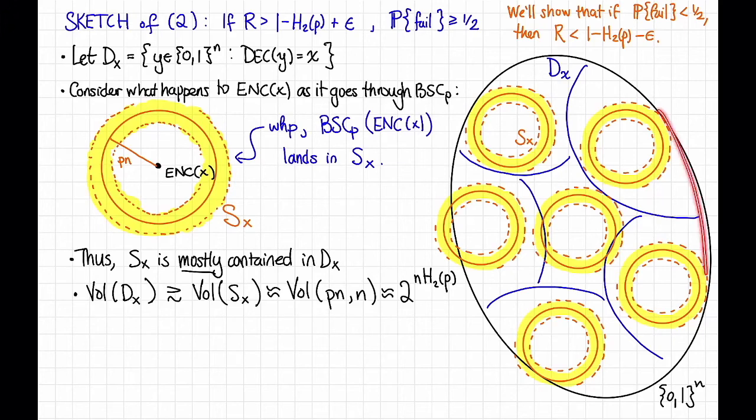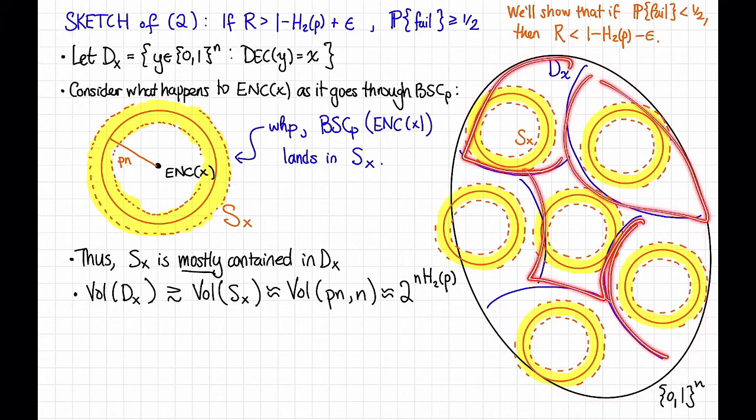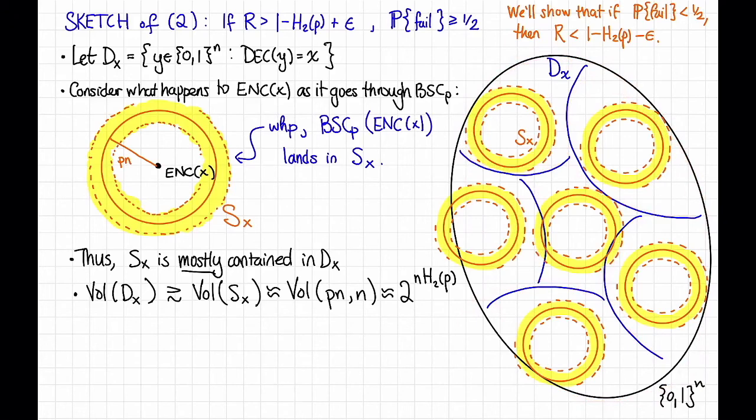But since this whole space, {0,1}^n, is broken up into these regions D_x, that means that the total volume in this space divided by this bound on the total volume of each of the D_x's is going to give us a bound on the number of D_x's that we can possibly fit in this space, aka the number of messages x that we can possibly encode.